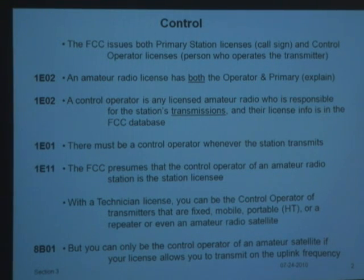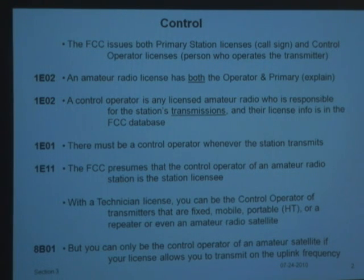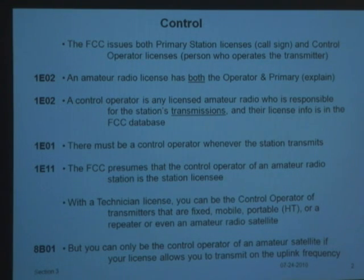An amateur radio license has both an operator and primary license — the primary is the call sign. The control operator is a licensed amateur radio operator responsible for the station's transmissions, and their license information is in the FCC database. Once I get my call sign, I'm the control operator for this radio and I have to make sure it's being used appropriately. It's like having a driver's license — it's your responsibility to drive properly.